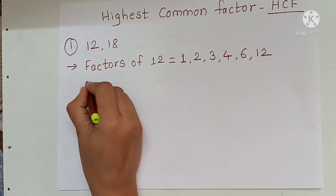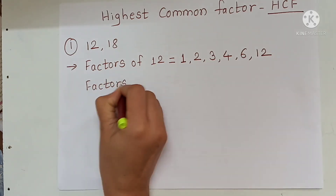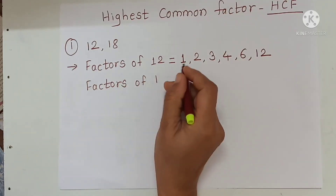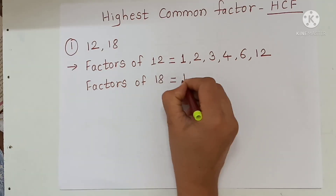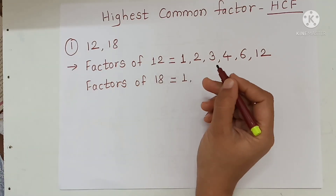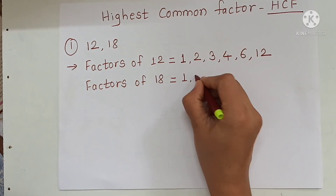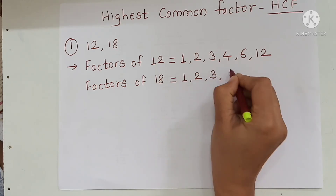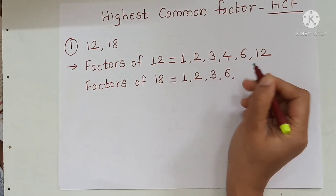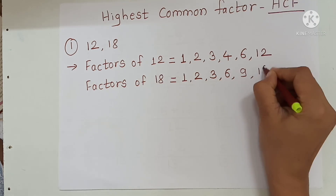Then factors of 18: 1 is the factor of every number, so 1 first of all, then 2, 3, 6, 9, and 18.